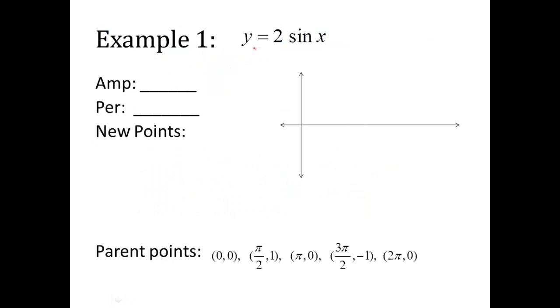Alright, so here we go. y equals 2 sine of x. Look first at your amplitude. Remember, amplitude is the absolute value of a. A is a 2. So the absolute value of 2 is 2. The period is, remember, it's 2π divided by b. In this equation, the b is just a 1, so my period is just still 2π. Now to create those changes created by this amplitude, I look at my parent points from sine. And I've listed them here. Again, you need to get these memorized.